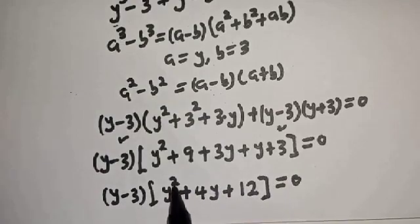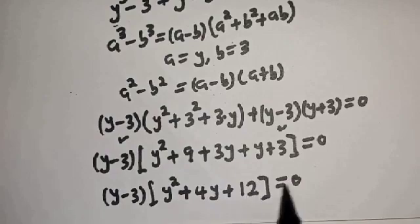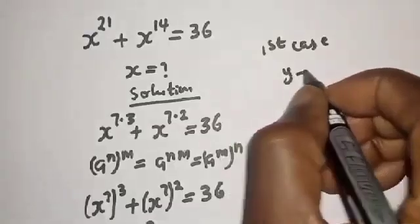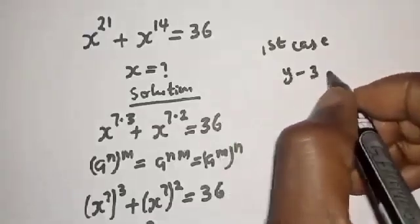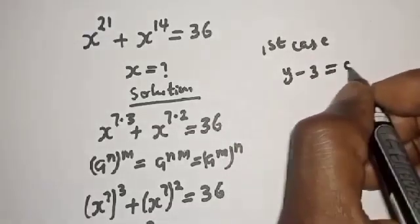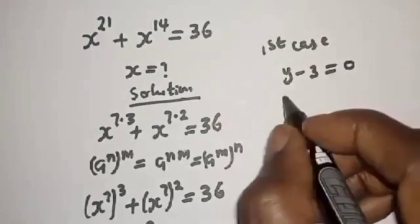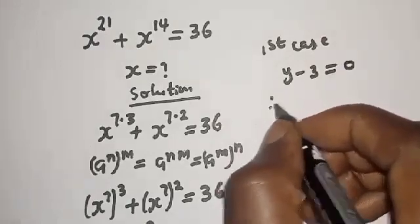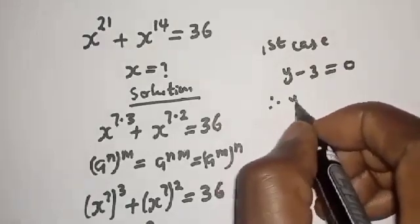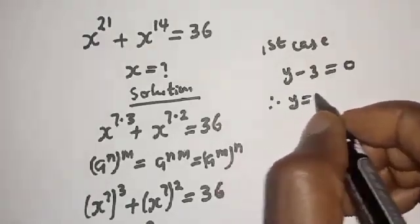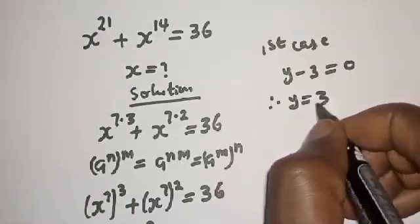There are two cases. The first case: y minus 3 equals zero. The second case: y squared plus 4y plus 12 equals zero. From the first case, y minus 3 equals zero, therefore y is equal to 3.